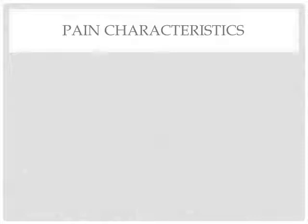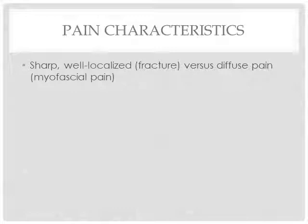Some important points about pain characteristics: sharp, well-localized pain is what you'd experience with a fracture, or even a soft tissue injury like a muscle strain, muscle tear, or ligament sprain. Diffuse pain is what you'd experience with something like myofascial pain or a more persistent issue with an insidious onset. You may also have radiating pain from a nerve — be able to differentiate radiating versus referred pain. Radiating pain comes from a nerve, and you might hear the term radiculopathy — some type of pain stemming from pathology to a nerve or nerve root.